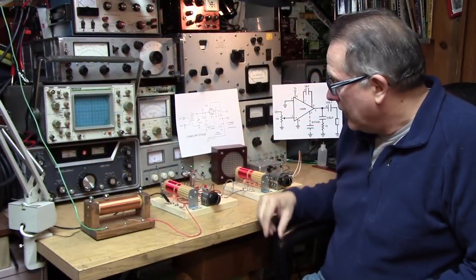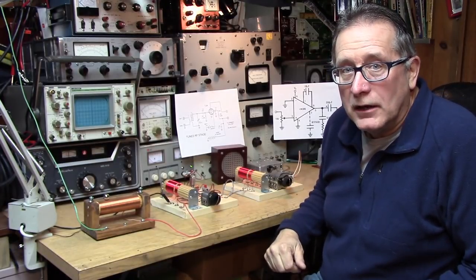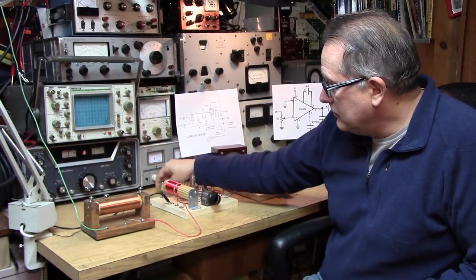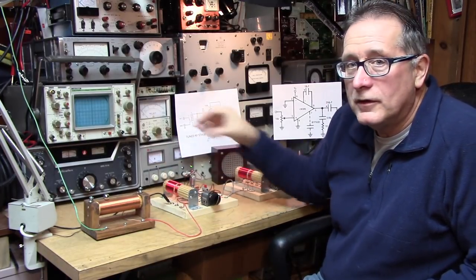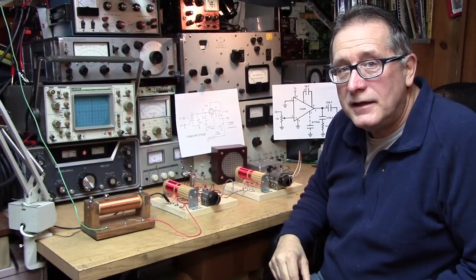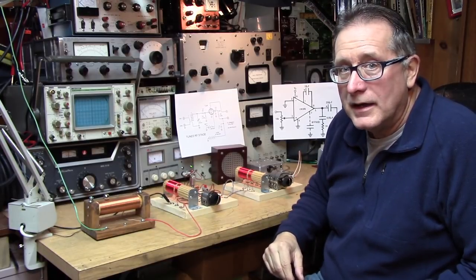So here in part two, we're going to take the transistorized TRF and we're going to convert it into a tube type using a 1U4 tube. Before we get there, we've got a little more to discuss with the solid state version, especially in regard to stability and bias.